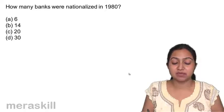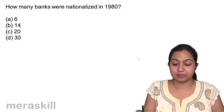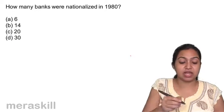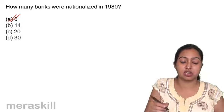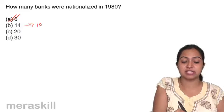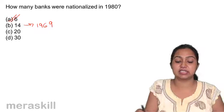How many banks were nationalized in 1980? In 1980, 6 banks were nationalized. 14 banks were nationalized in the year 1969.